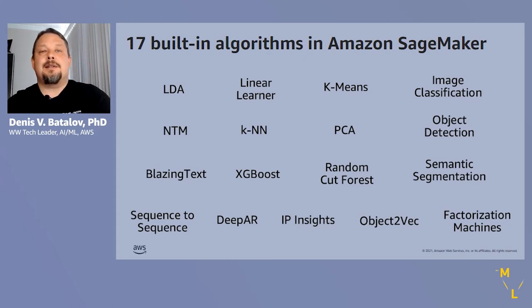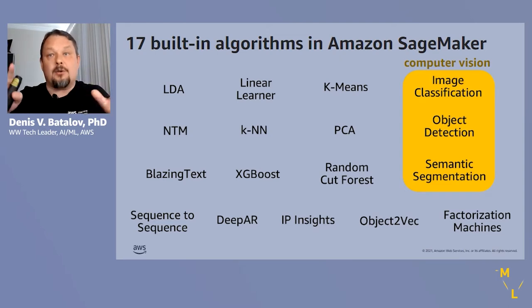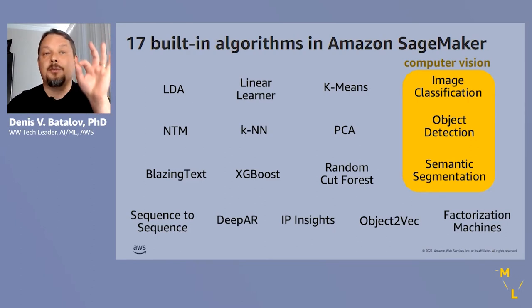We can categorize these algorithms by the typical applications or use cases for each. This first group is naturally related to computer vision. Image classification assigns one or several labels to each image describing it in terms of the scenery or objects present. Object detection is more precise in that it provides the location of individual objects via bounding boxes. Finally, semantic segmentation classifies each pixel as belonging to a particular object type.